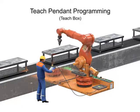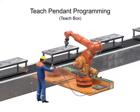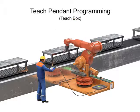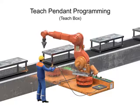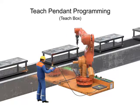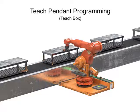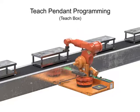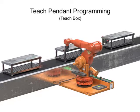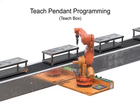ANSI standards recommend a speed of no more than 10 inches per second when programming. Once the technician has recorded and tested the program, the teach pendant is disconnected and the robot can operate the stored program at full speed. Teach pendant programming is often associated with controlled path and point-to-point control.